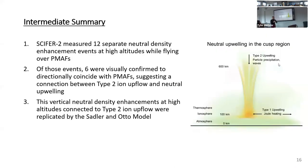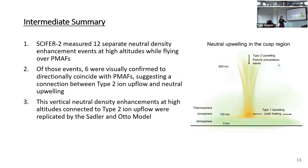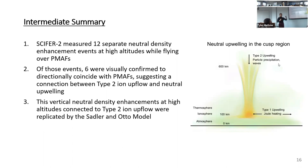As a quick summary: Cypher 2 measured 12 separate neutral density enhancements, many at high altitudes while flying over PMAPs, showing neutral density enhancement at high altitudes associated with type 2 upwelling. Of those events, six were directionally correlated with PMAPs, suggesting a connection between type 2 ion upflow and neutral upwelling. This was seen both through the Cypher 2 measurements and confirmed through the model using precipitating electrons, showing density enhancements at high altitudes.